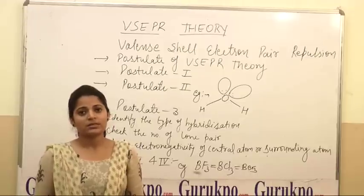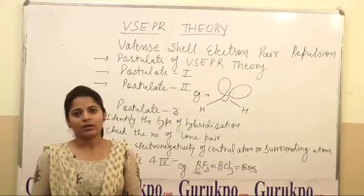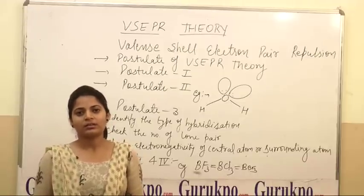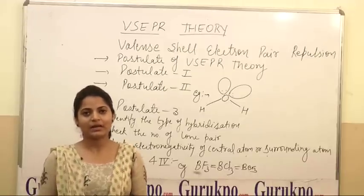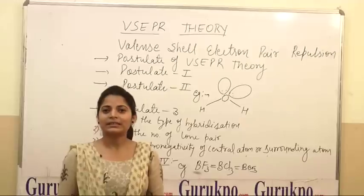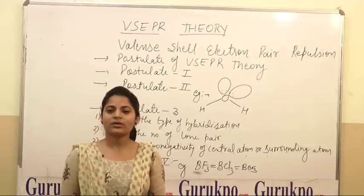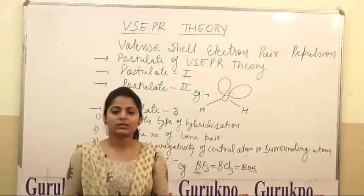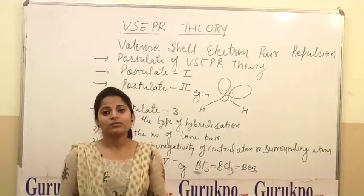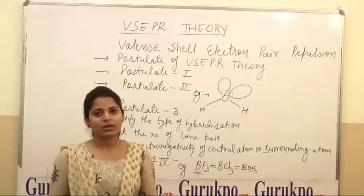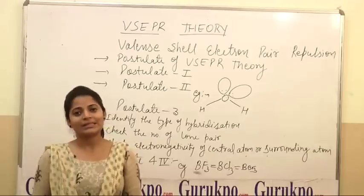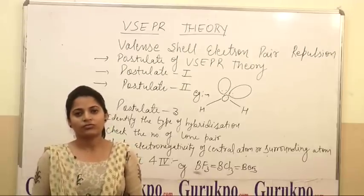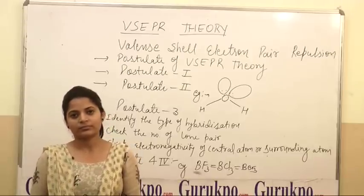For this, if lone pairs are present, they are not considered in the shape of the molecule. Third point: for the shape of the molecule, we at least require 3 atoms.